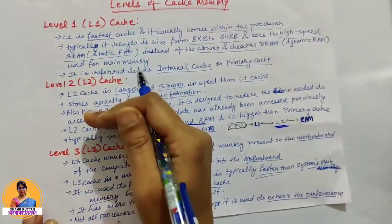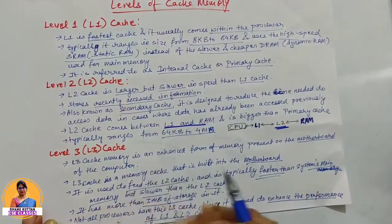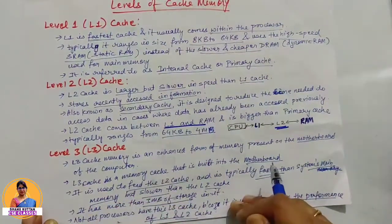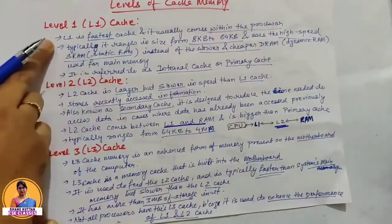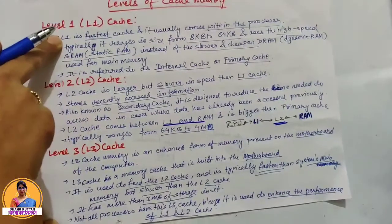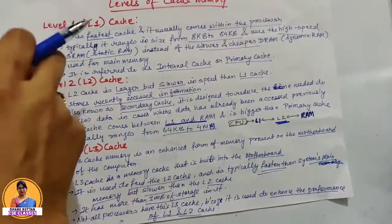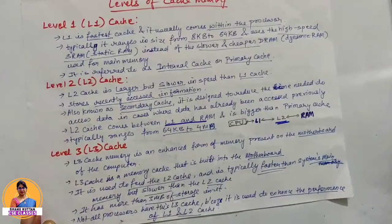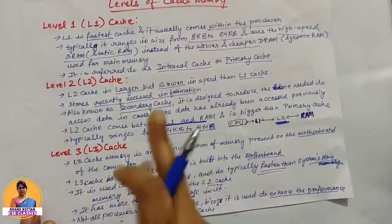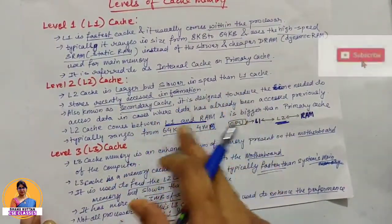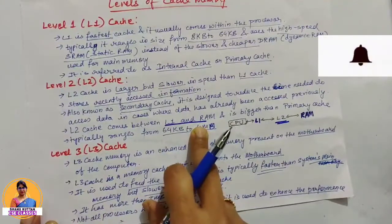In summary, L1 cache is faster than L2 cache, which is faster than L3 cache. L1 and L2 caches are located within the processor, while L3 is on the motherboard. L1 cache size is typically between 8KB and 64KB, and instructions and data are stored there. Data accessed through L1 is stored in L2 cache.